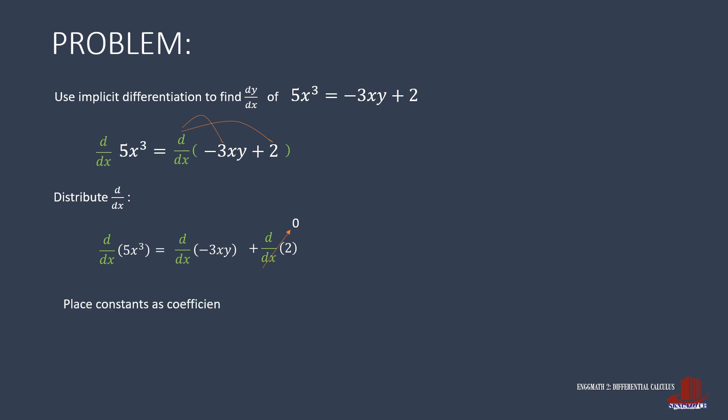The next step is to employ the constant multiple rule. So 5 from the left side will be placed before the derivative of x cubed. On the right, negative 3 is then placed before the derivative of xy. With only two terms left, check that the left side will be differentiated using power rule. The right side requires product rule with d over dx of xy.